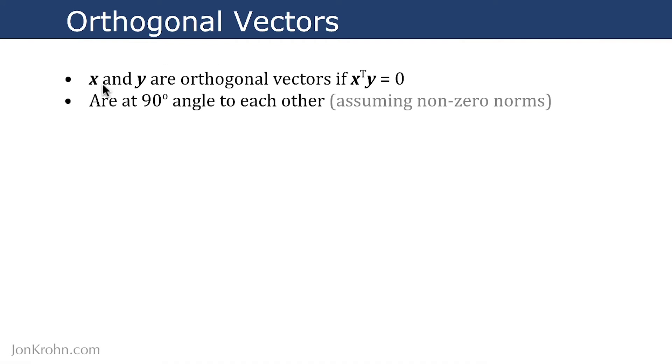But what this, in effect, means is that assuming both of the vectors x and y have some length, that is, they have non-zero norms, their length is something other than zero, then what this means is that the vectors are at a 90-degree angle to each other. They are orthogonal.